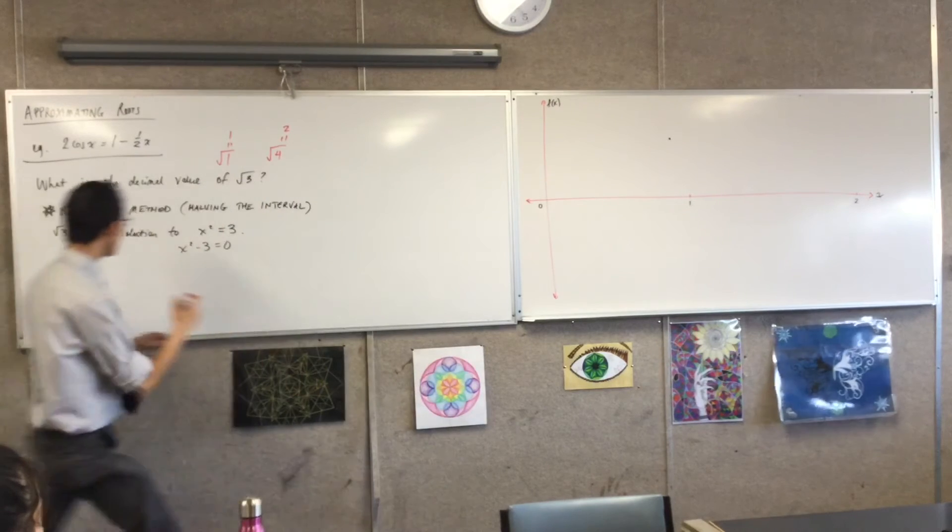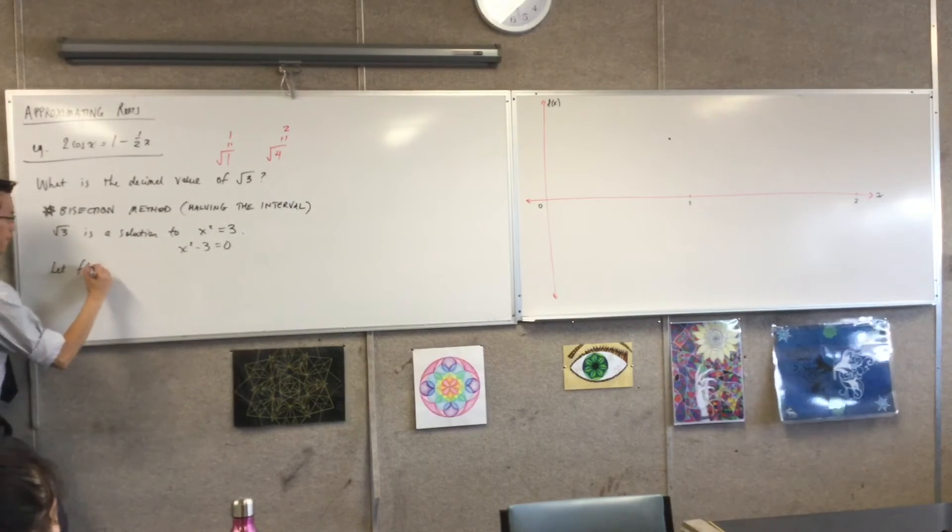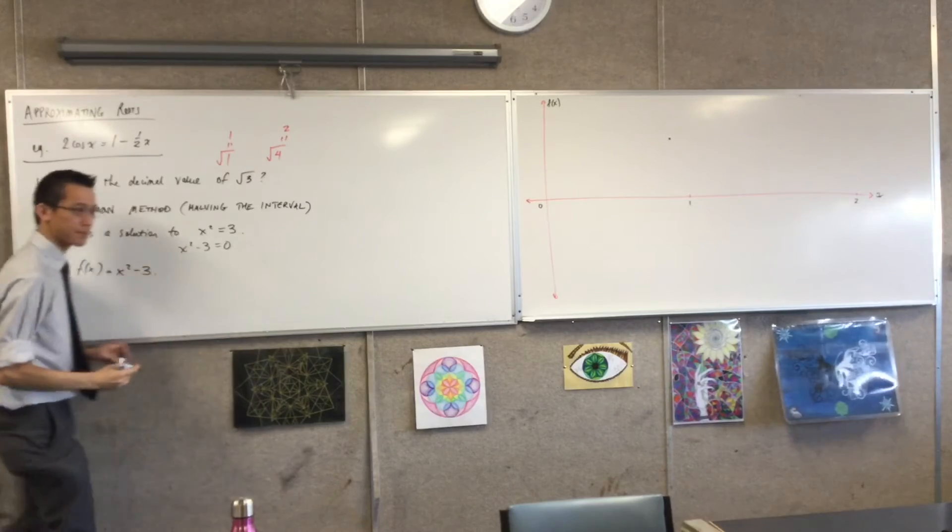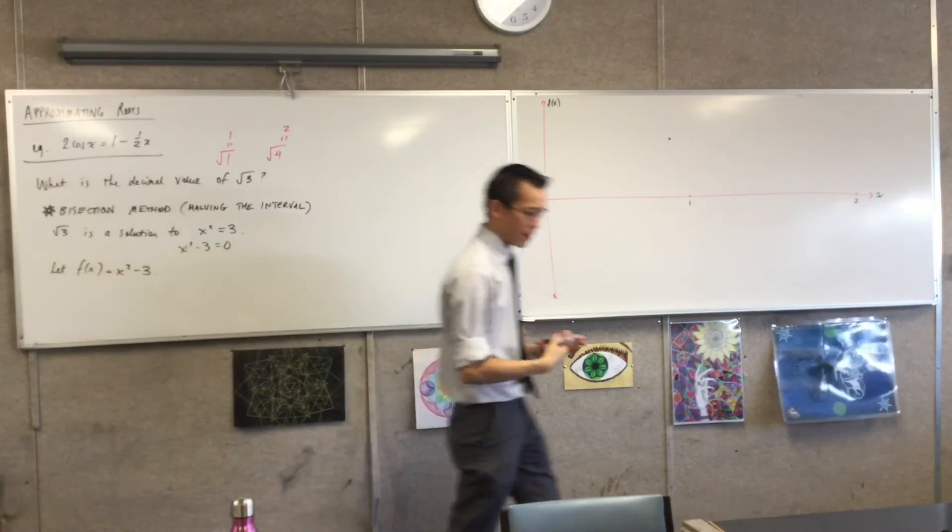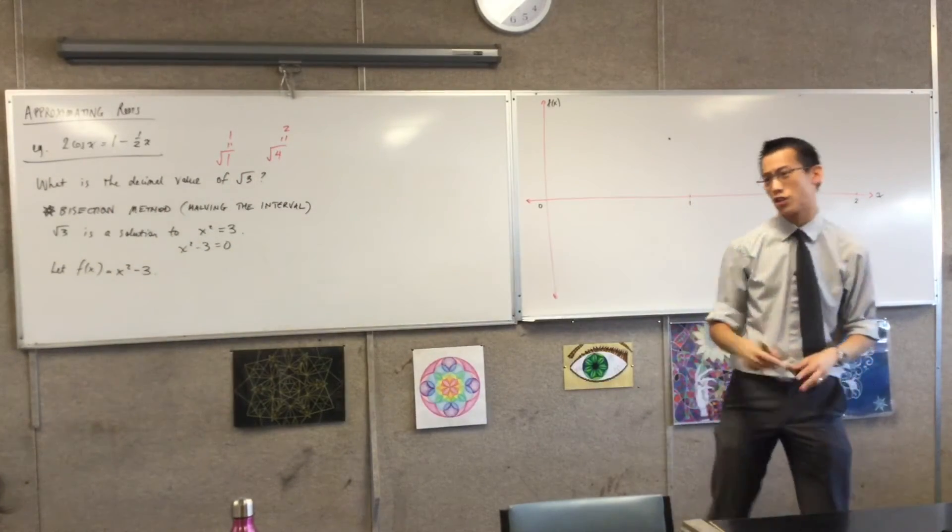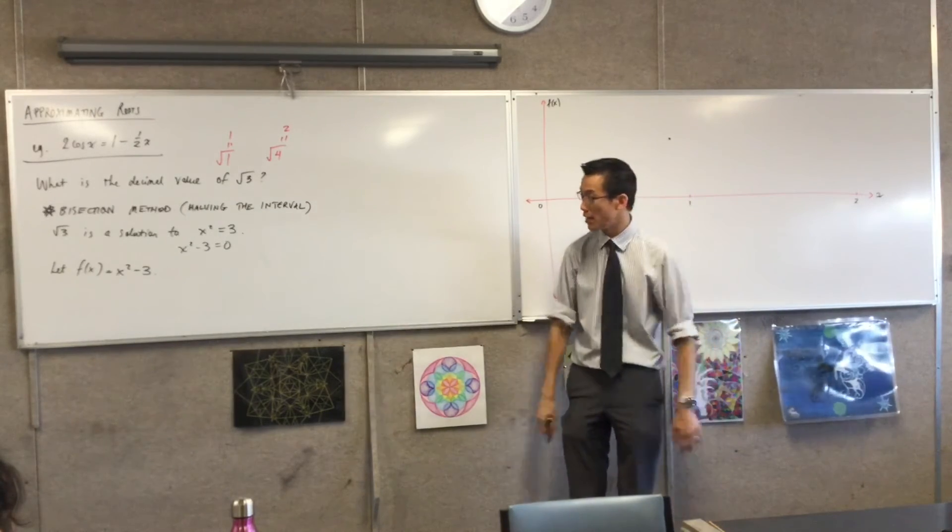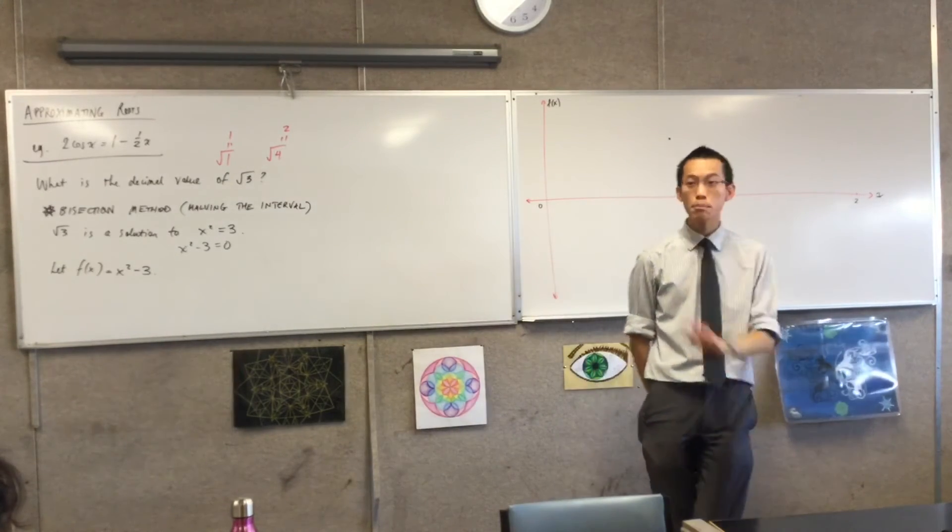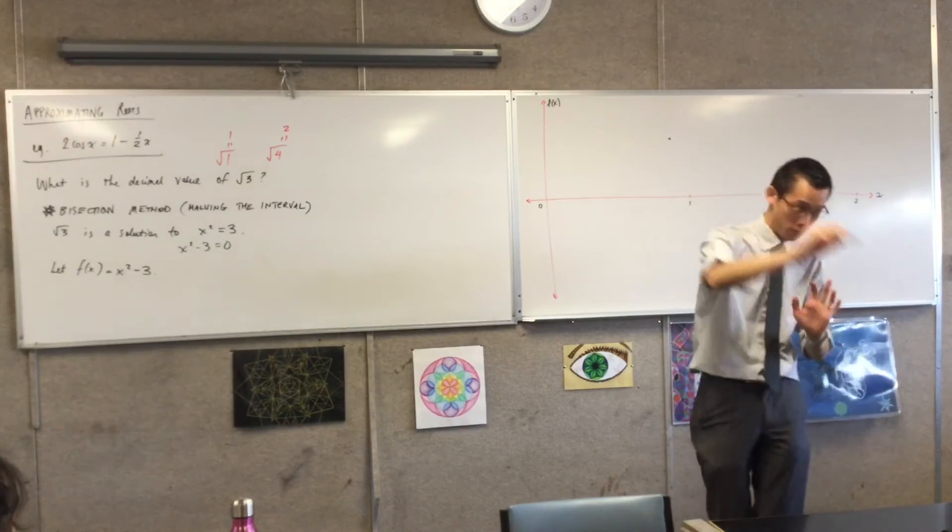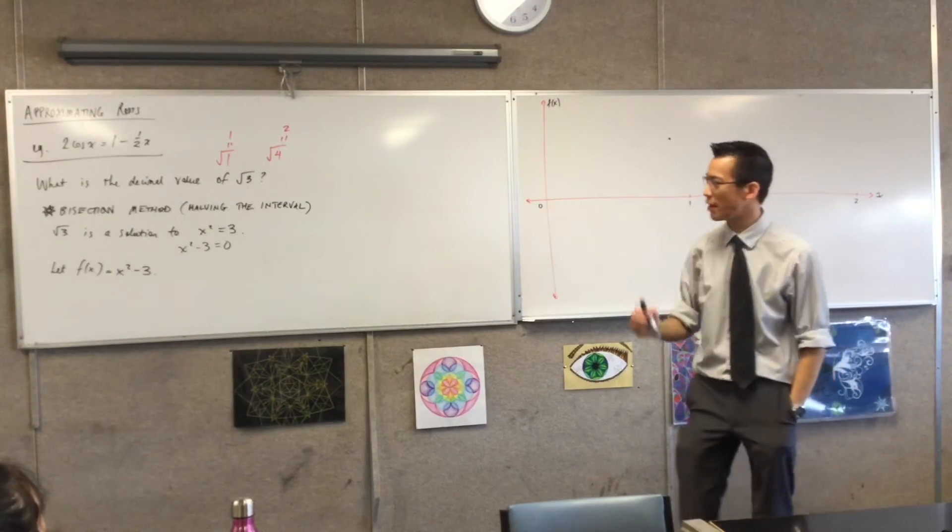So, let's let f of x equal x squared minus 3. Now, one of the reasons why I chose this function and not tan is because x squared minus 3, in fact every polynomial, is a continuous function. There are no breaks, no gaps in the whole, I can draw it with one smooth line, okay?